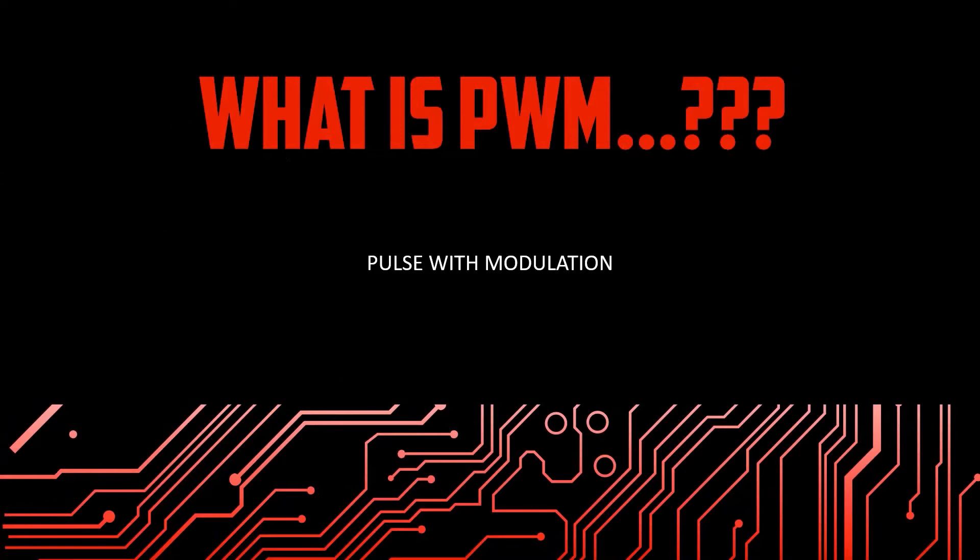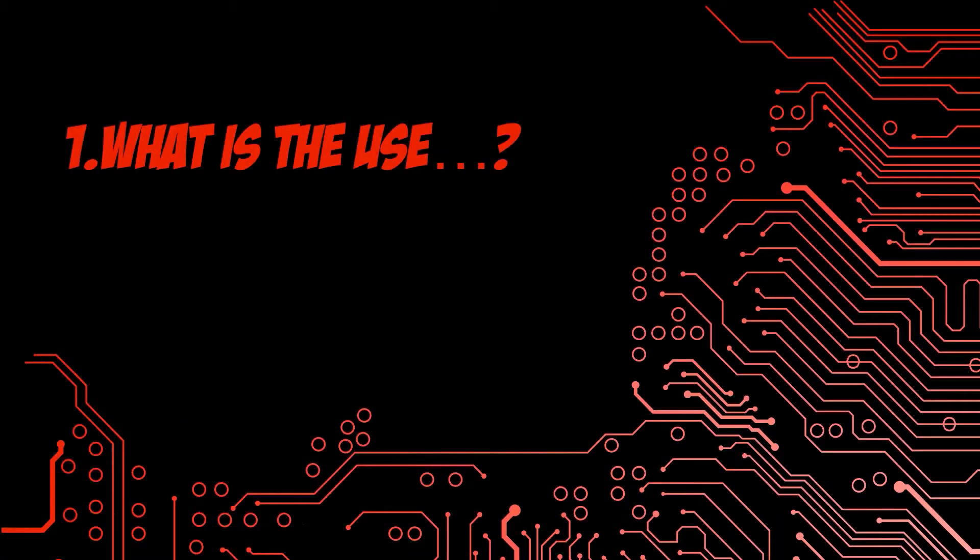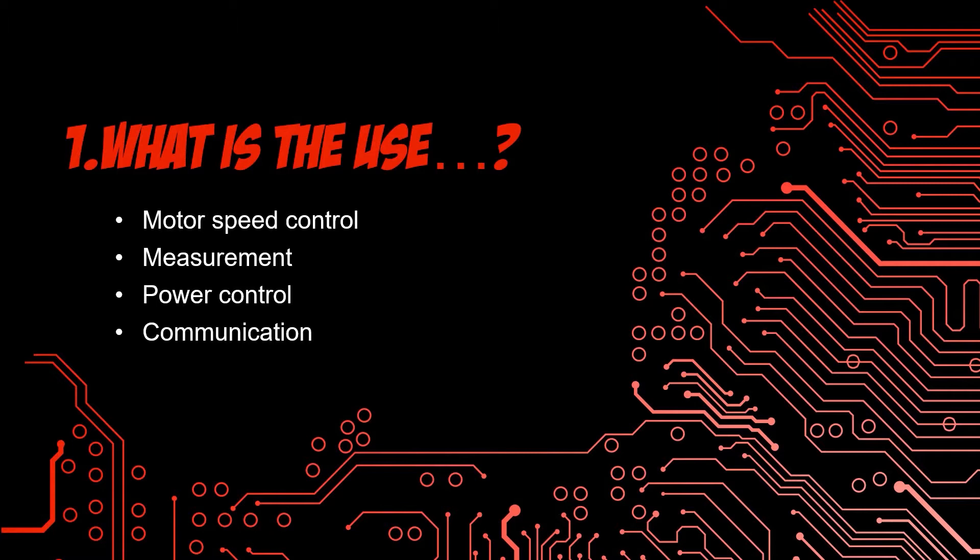So basically, what is PWM? PWM is a pulse with modulation. We modulate the generated electric pulse to get what we want. Using the PWM wave, we can adjust the speed of a motor, use it for various measurements, power controlling, and for communication purposes because we can generate waves for a specific time with a specific voltage.